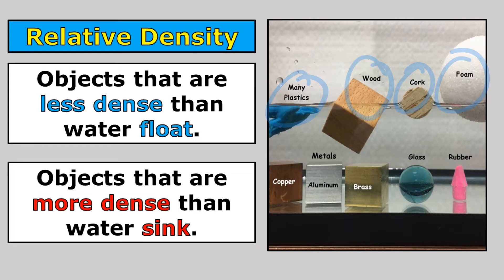And objects that are more dense than water sink. So it's important that you understand that metals, glass, and rubber are all more dense than water. So they sink.